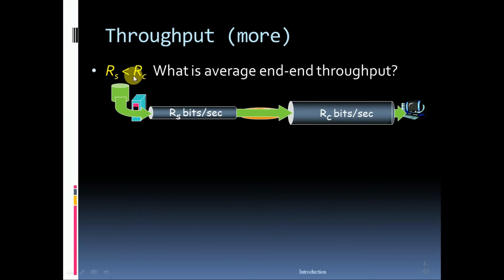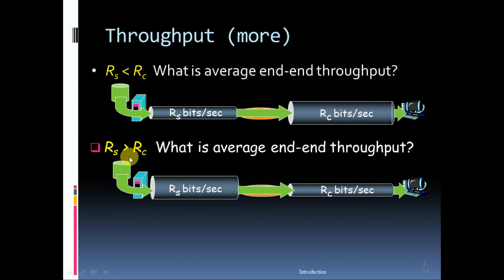Rs is less than Rc. What is the average end-to-end throughput? And Rs is greater than Rc. What is average end-to-end throughput?